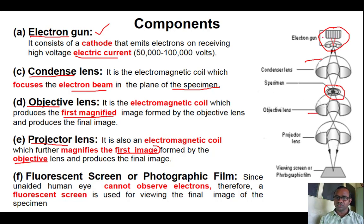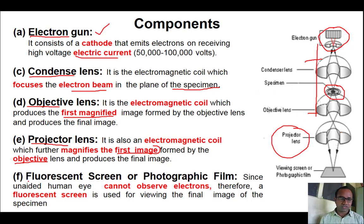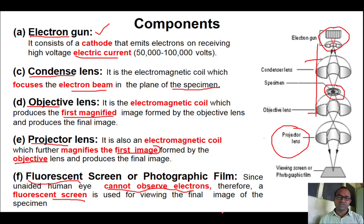Electrons produced by the electron gun travel and fall onto the sample. An important point is that we have to create and maintain a vacuum inside the whole structure because the movement of electrons will be deflected by air. The electron travels in a straight direction onto the sample in the presence of vacuum. The electrons finally fall onto the specimen, which is then focused by electromagnetic lenses. Since our eyes cannot observe electrons, we need a fluorescent screen to observe the image.